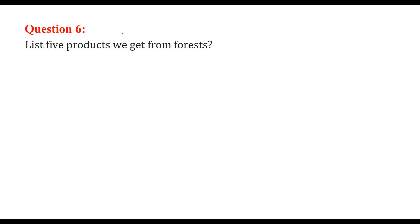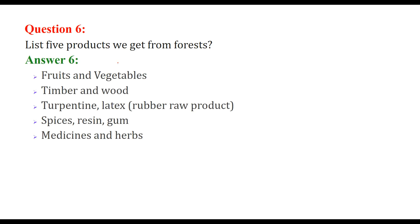List five products we get from forests. We get fruits and vegetables, timber and wood, turpentine latex — that is the raw rubber product — spices, resin, gum, medicines and herbs.